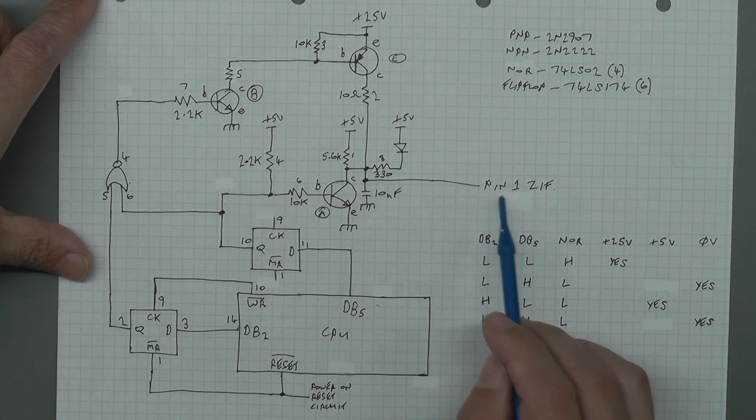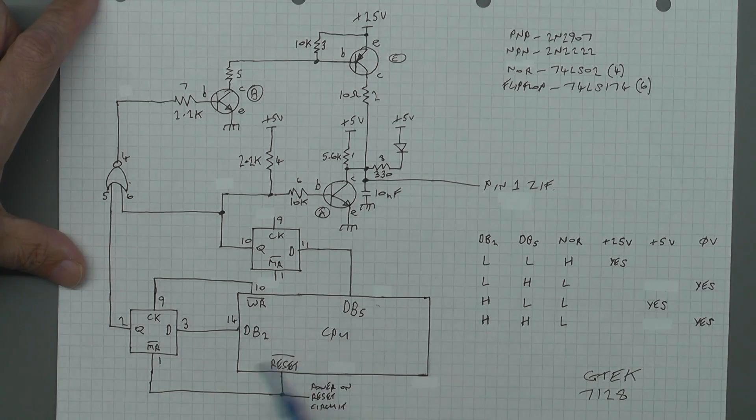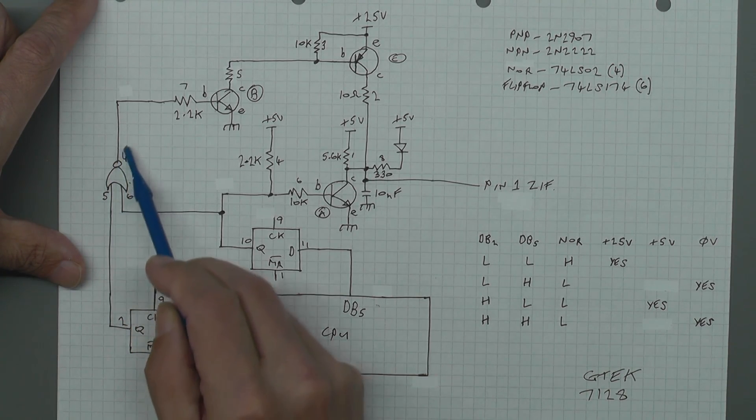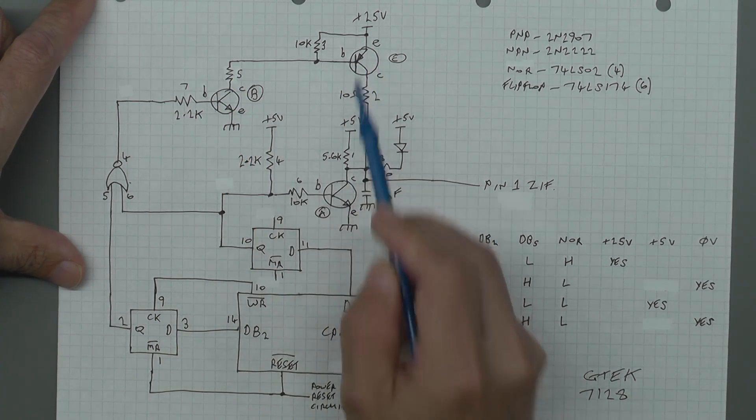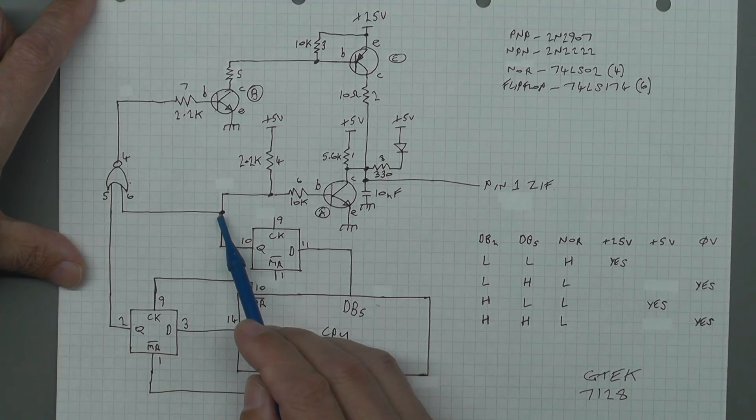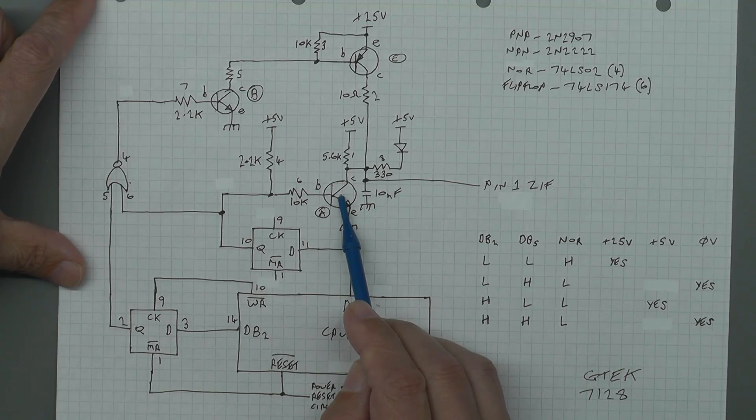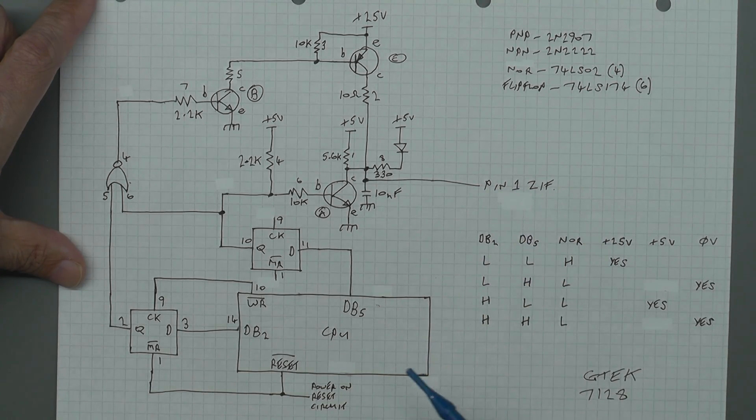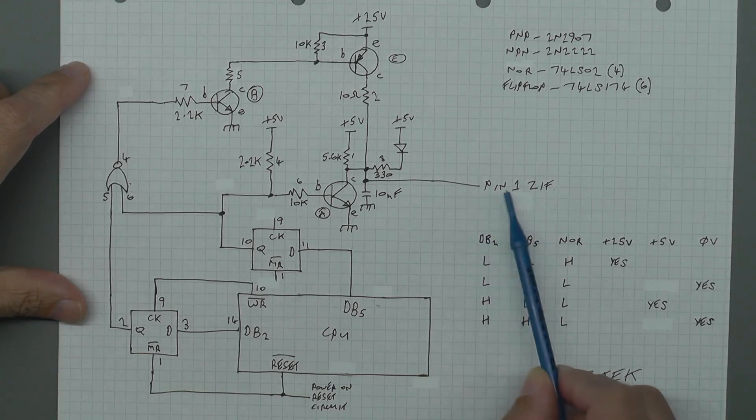Alternatively you might want zero volts on pin one of the ZIF. That's achieved by a couple of different ways. I'll just mention one of them: it's by setting both db2 and db5 high, which will put both inputs to the NOR gate high, which will result in the output going low. Therefore this transistor will be turned off and this one will be turned off, no 25 volts, but now this line here is high, which turns on this transistor here, which basically grounds this line to pin one of the ZIF. And there we have it, a kind of tri-state control over pin one of the ZIF.